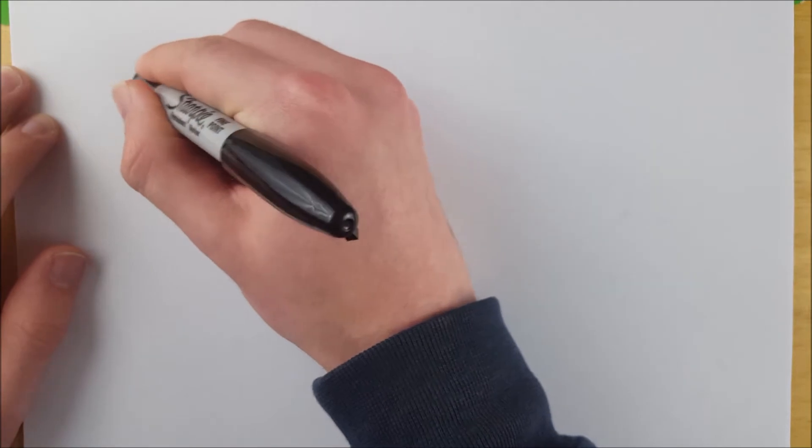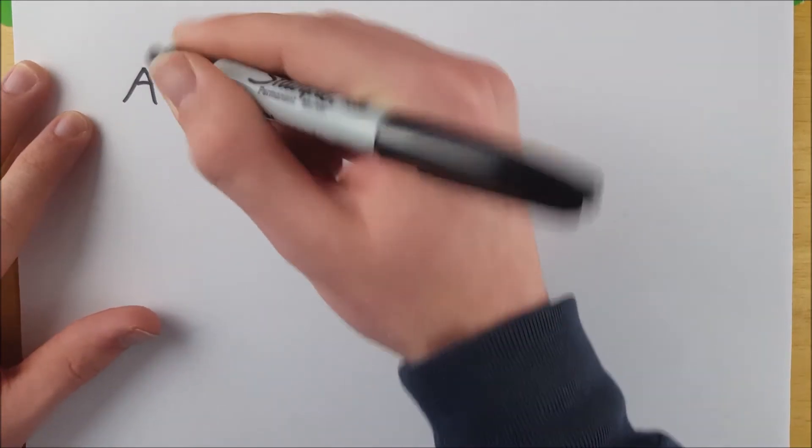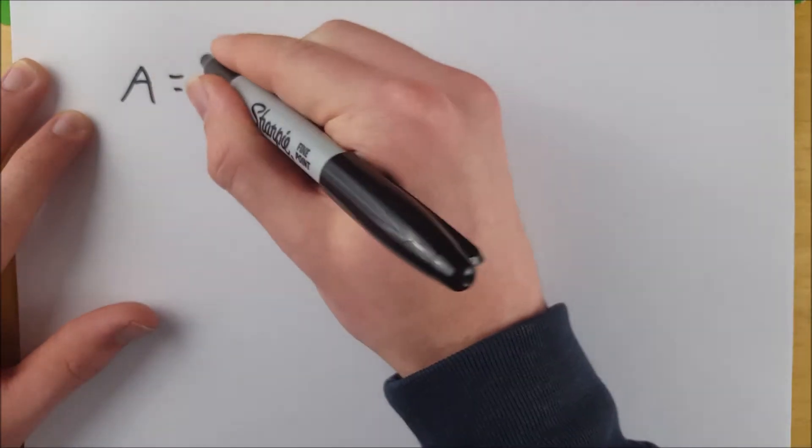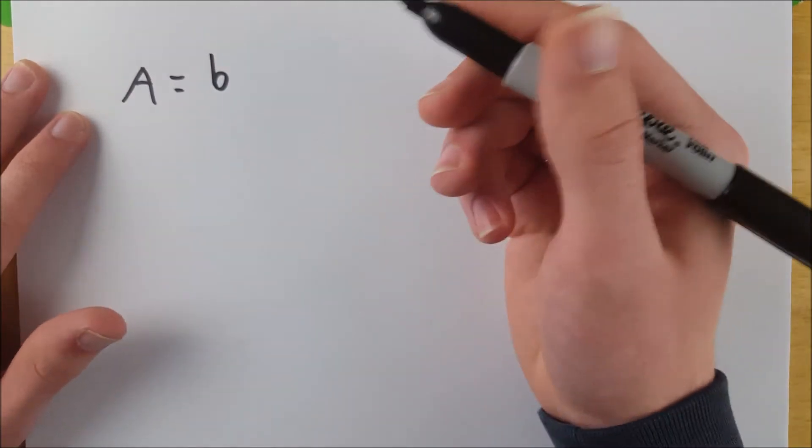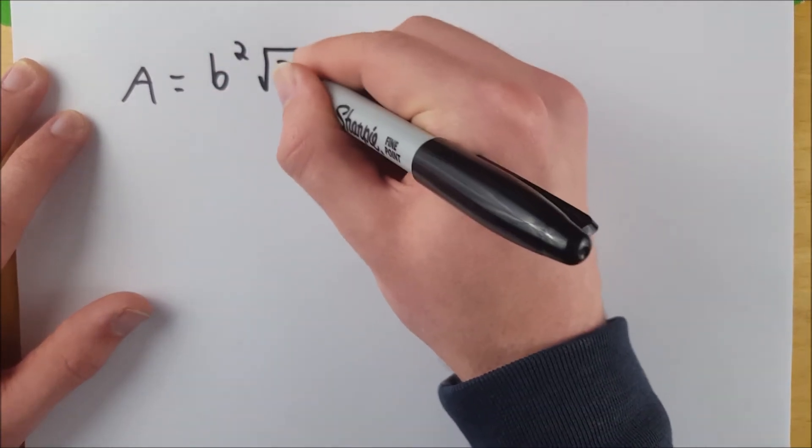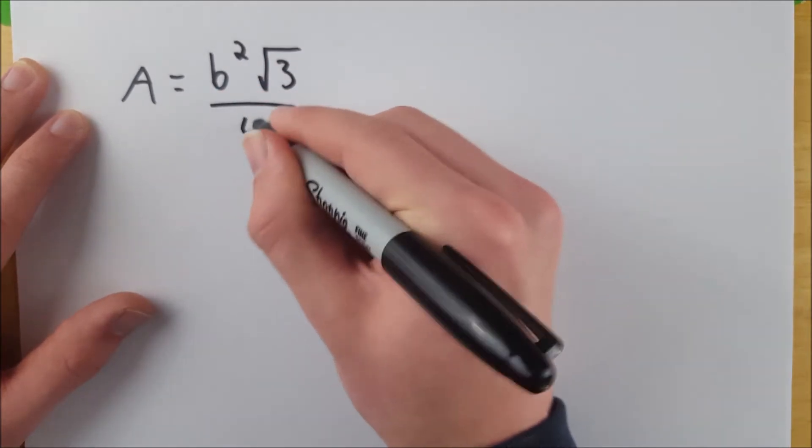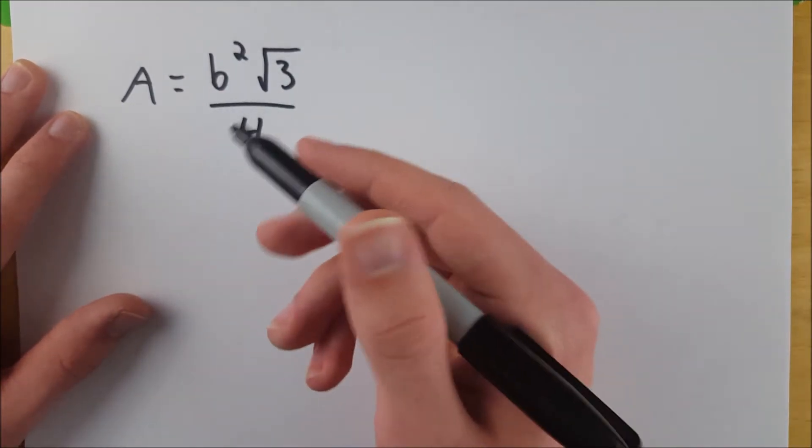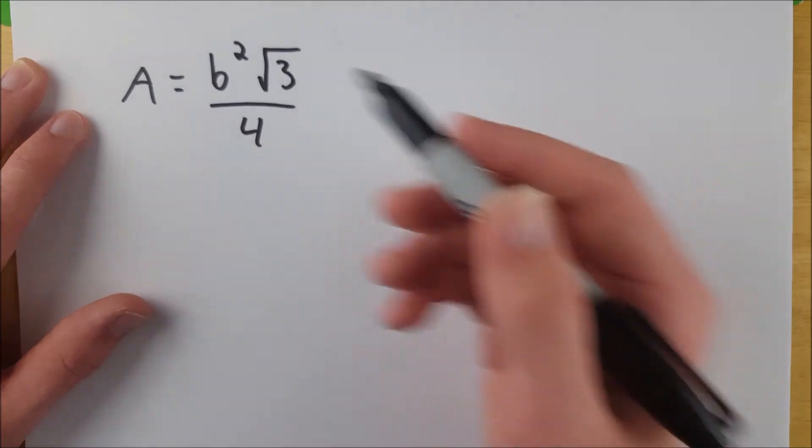You might not be familiar with it, maybe you are. The area of an equilateral triangle is equal to b squared, b just being the base, which would be any side length, b squared multiplied by the square root of three over four. Really handy because for an equilateral triangle, you don't have to find the height to find its area.